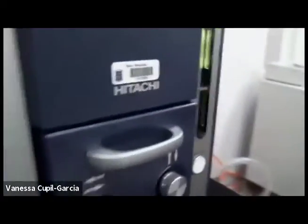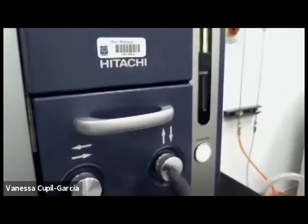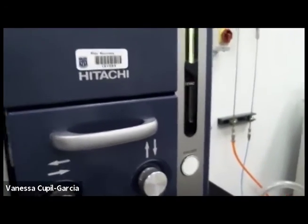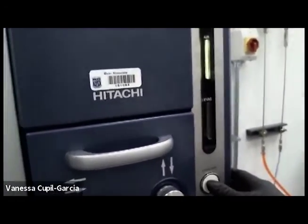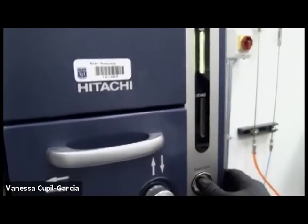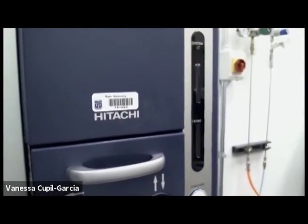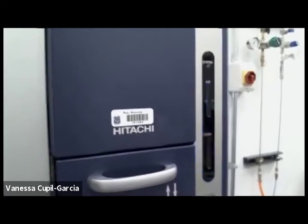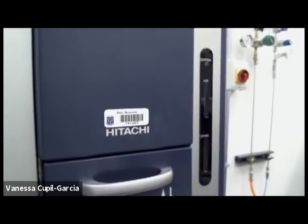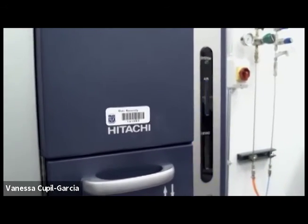So to get the microscope working, we close our chamber. And we can move our sample in different directions using these knobs. And turn on the vacuum.